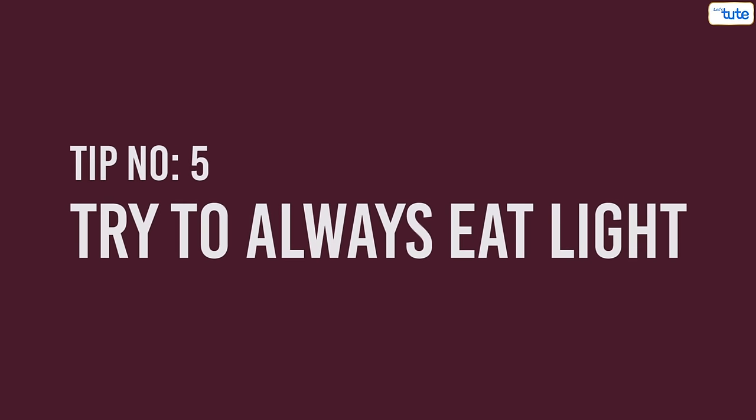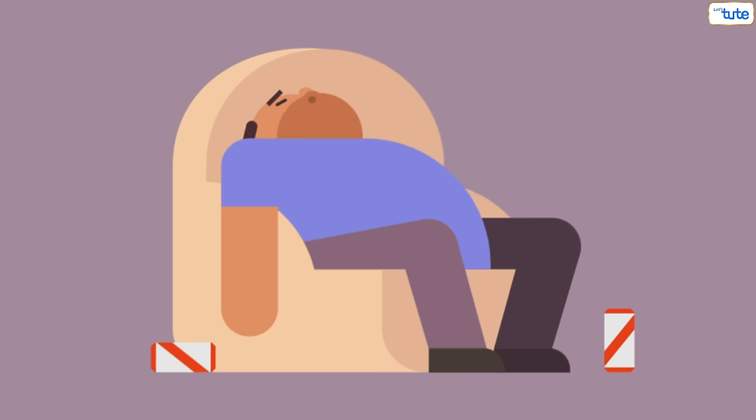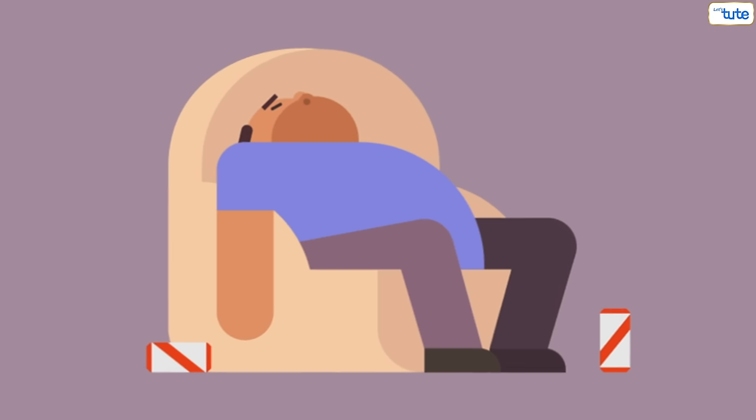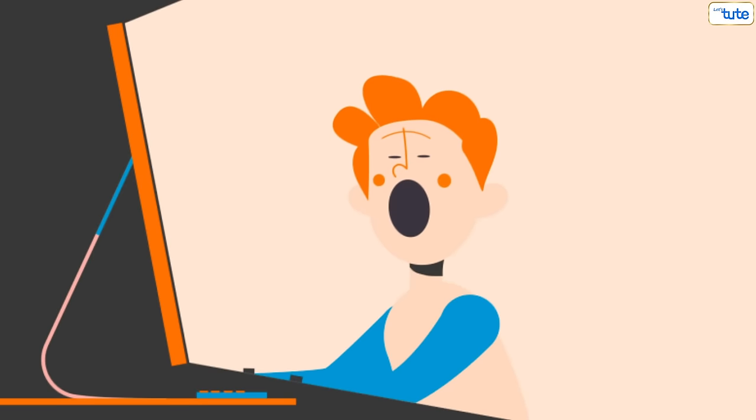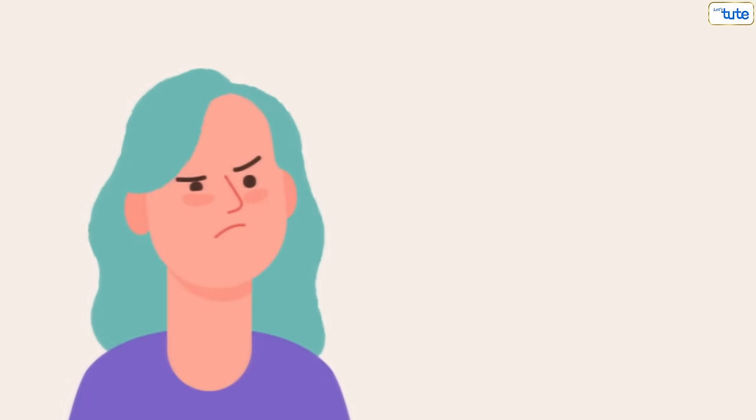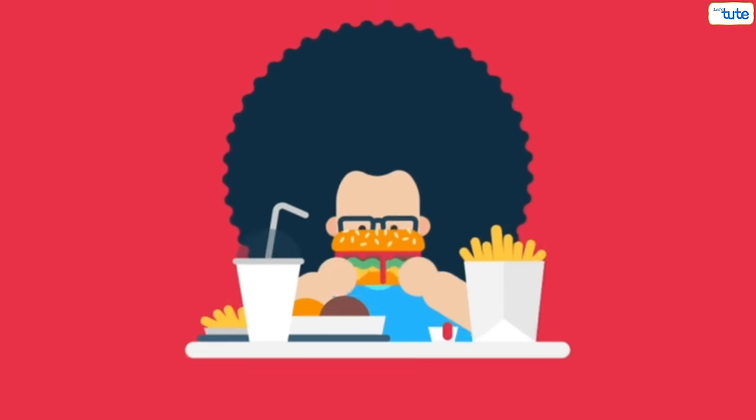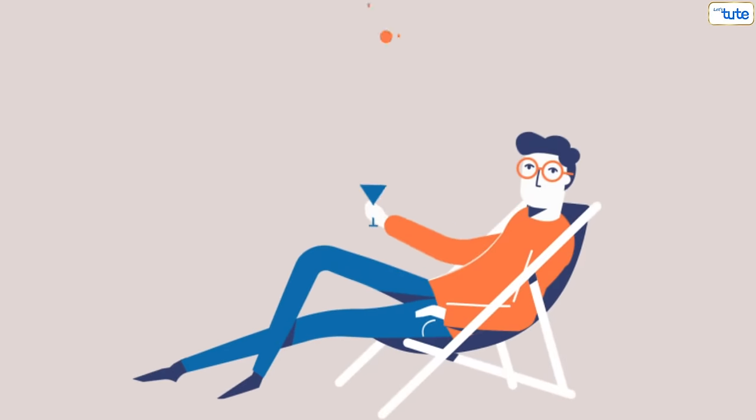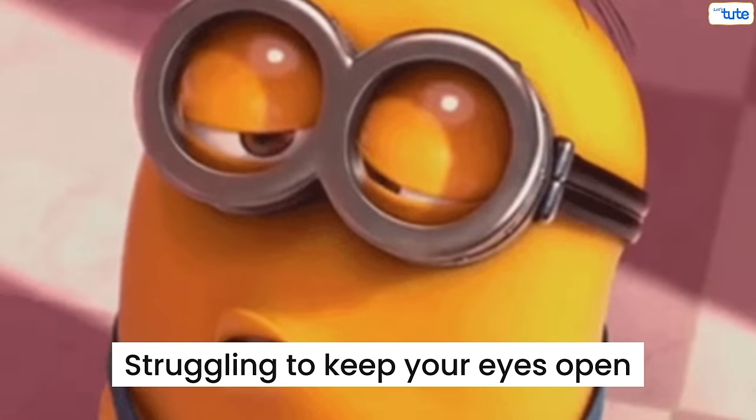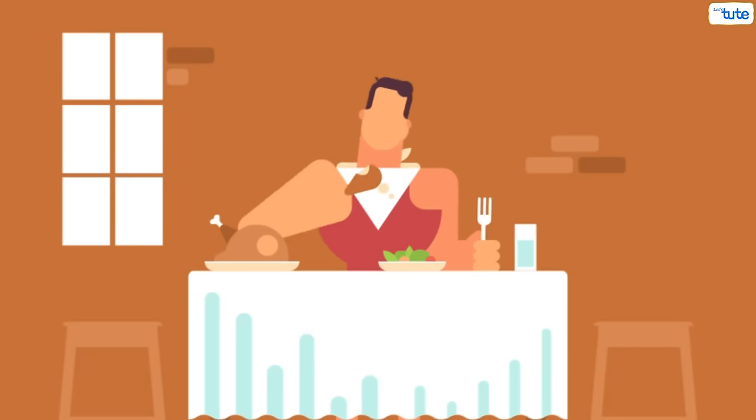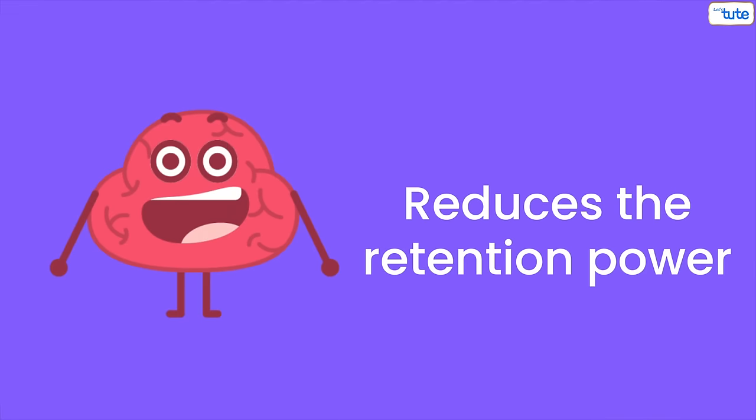Tip number five, try to always eat light. I know we have all felt sleepy or even drowsy after a meal and if you have to study in such a mood, then no one can help you. Why does this happen? This happens because after having a heavy meal, you feel full and relaxed and hence you are struggling to keep your eyes open. This lack of energy comes after consuming a heavy diet which reduces your retention power.